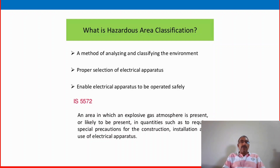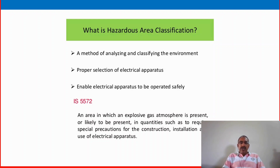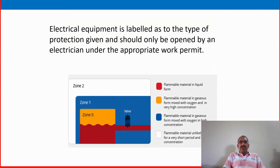We can define which type of tools we can use in that area, and we can add in permits that the area is classified in various zones, to enable electrical apparatus to be operated safely — per IS 5572. An area in which an explosive gas atmosphere is present or likely to be present in quantities such as to require special precautions for the construction, installation and use of electrical apparatus. Electrical equipment is labeled as to the type of protection given and should only be opened by an electrician under the appropriate work permit. There is a picture showing various zones — Zone 0, Zone 1, and Zone 2.